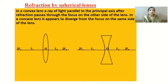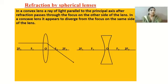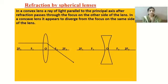When a ray of light is parallel to the principal axis, after refraction it will always pass through the second focus F₂ of the convex lens. On the principal axis, F₁ is to the left side and F₂ is to the right side. 2F₂ is double the length of F₁ and F₂, so 2F₂ and 2F₁ can also be considered the center of curvature.